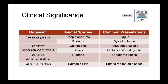Yersinia pestis is the cause of plague — a concern in people, and in veterinary species most relevant for cats. We also see sylvatic plague in rodents. Yersinia pseudotuberculosis causes pseudotuberculosis in guinea pigs and other species, and in sheep we see orchitis and epididymitis — inflammation of the testicles and epididymis. Yersinia enterocolitica is a cause of foodborne illness in people. Yersinia ruckeri is the agent of enteric red mouth disease in salmonid fish.